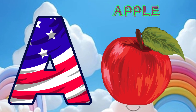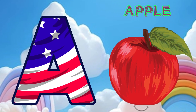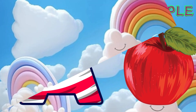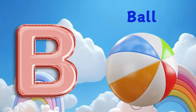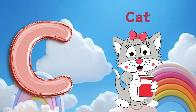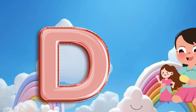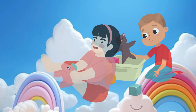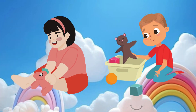A is for apple, a-a-apple. B is for ball, b-b-ball. C is for cat, c-c-cat. D is for doll, d-d-doll.